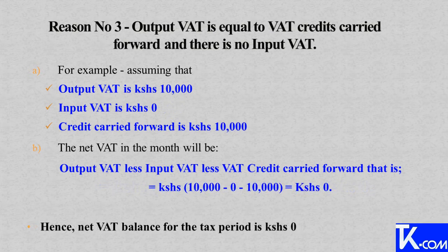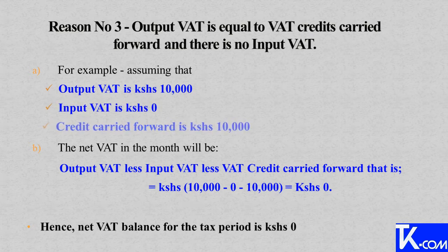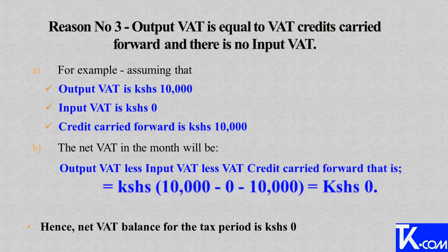The third reason is because output VAT is equal to the VAT credit carried forward and there is no input VAT. For example, if we assume that the output VAT is 10,000, input VAT is zero, and credit carried forward is 10,000, the net VAT balance in the month will be output VAT less input VAT less VAT carried forward, which gives us 10,000 minus zero minus 10,000, which is equal to zero. Therefore, the net VAT balance for the tax period is zero.